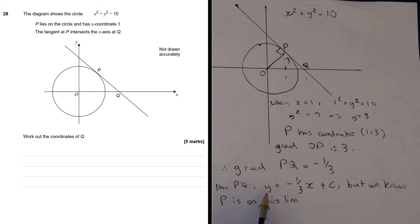So let's plug those in. At the point P, y is 3, and that's equal to minus 1 third of x, which is 1, plus C. So this tells us that C is going to be 3 plus 1 third, which is going to give us 10 over 3. So the equation of the line is minus 1 third x, plus 10 over 3.